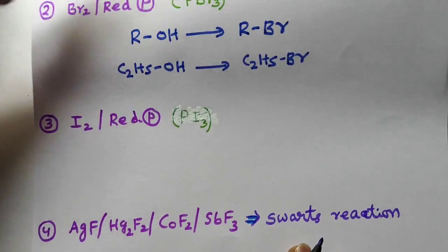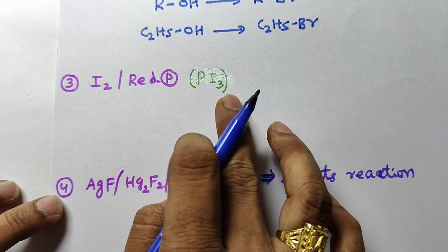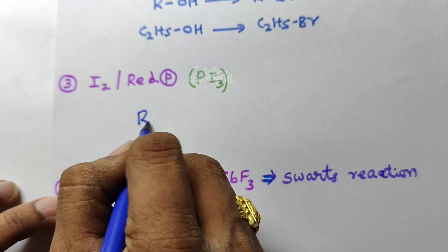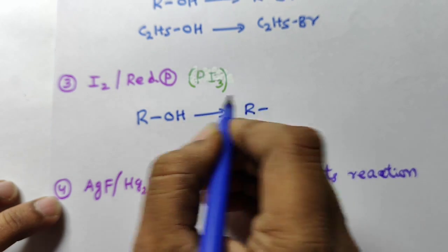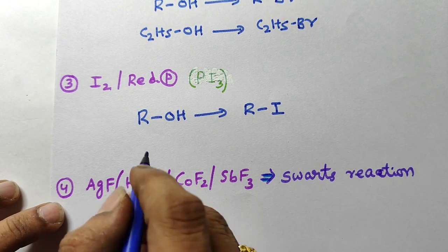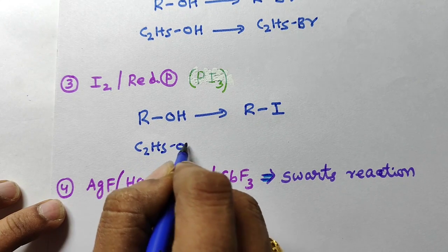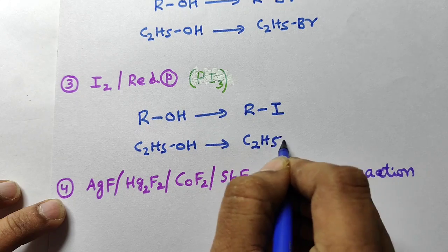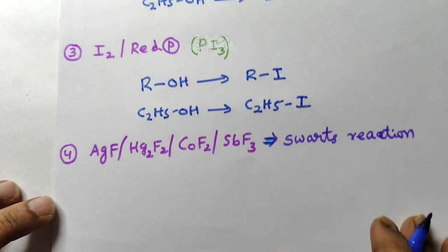Third reagent: iodine and red phosphorus, which gives PI3. Same way, alcohol is converted into alkyl iodide. For example, C2H5OH, ethyl alcohol, is converted into C2H5I, ethyl iodide.